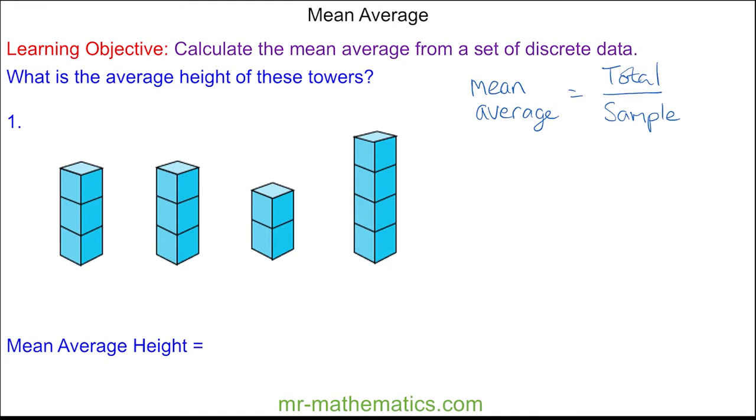So you can see the total number of bricks we have here is three, another three, two, and four. In total we have 12 bricks, and our sample is four because we have four towers. This means we have an average of three bricks per tower.